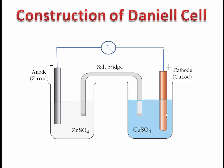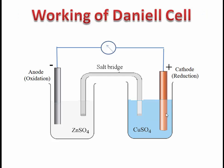In this way, the Daniel's cell construction is completed. Now we see the working of Daniel's cell. Among the zinc and copper rods, zinc has greater tendency to ionize in salt solution. Therefore, zinc ionizes to produce Zn²⁺ ions, leaving behind electrons on the zinc rod.